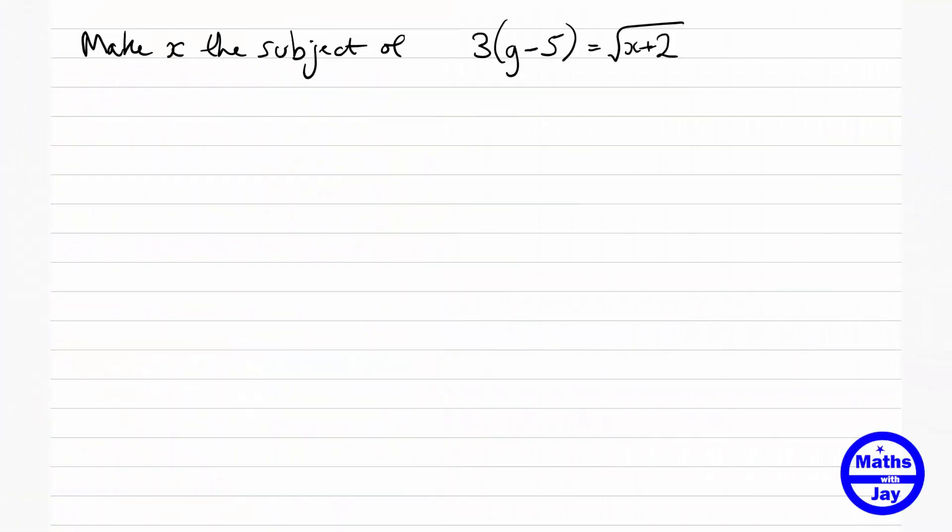So we're going to make x the subject of this formula. What we could do to start with, we're just going to write the left-hand side as the right-hand side, right-hand side as the left-hand side, so that the x is on the left-hand side. So we've got square root of x plus 2 is equal to 3 multiplied by g minus 5.